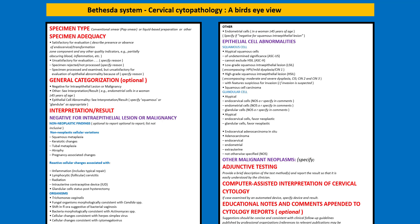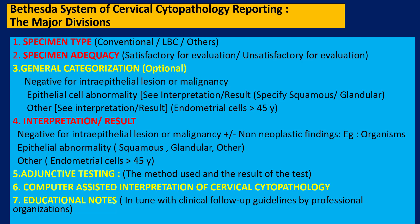Here we see a bird's eye view of the Bethesda system. Most of what is shown here is in too small a font to read, but I would like to draw your attention to the items shown in red. These are the seven major headings: specimen type, specimen adequacy, general categorization, interpretation/results, use of adjunctive tests, computer-assisted interpretation of cervical cytopathology, and educational notes, shown in different color codes.